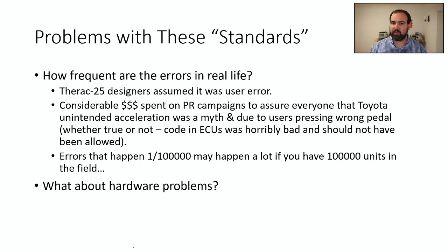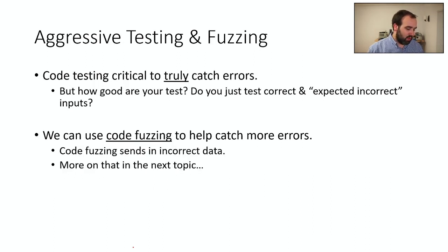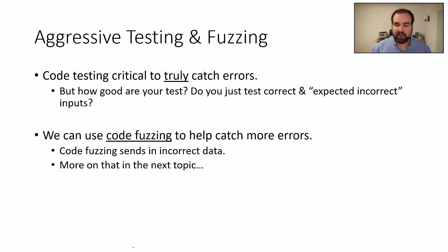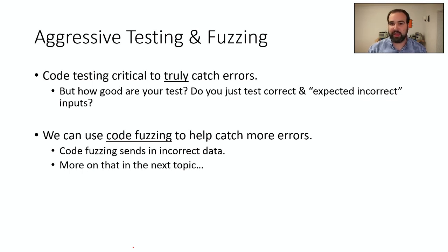You also have to consider hardware problems — you can't assume purely reliable hardware with no faults; always consider real probabilities. Finally, how good are your tests? One of the real solutions is aggressive testing, but testing only expected errors isn't enough. We want to do something called fuzzing — sending incorrect data and seeing what the results are. Fuzzing is used commonly in security as well. I'll go over briefly how fuzzing works and show a quick example of that next in 104.5.